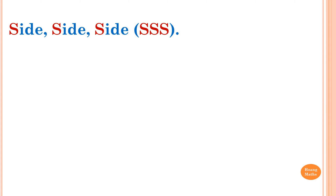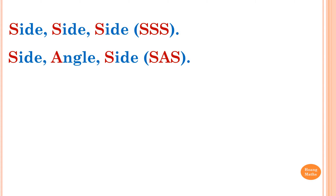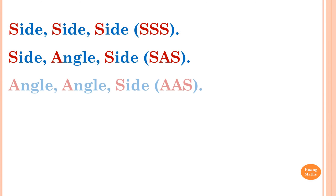The first rule is Side Side Side (SSS): three matching or corresponding sides are equal. The second rule is Side Angle Side (SAS): two corresponding sides and the included angles are equal.